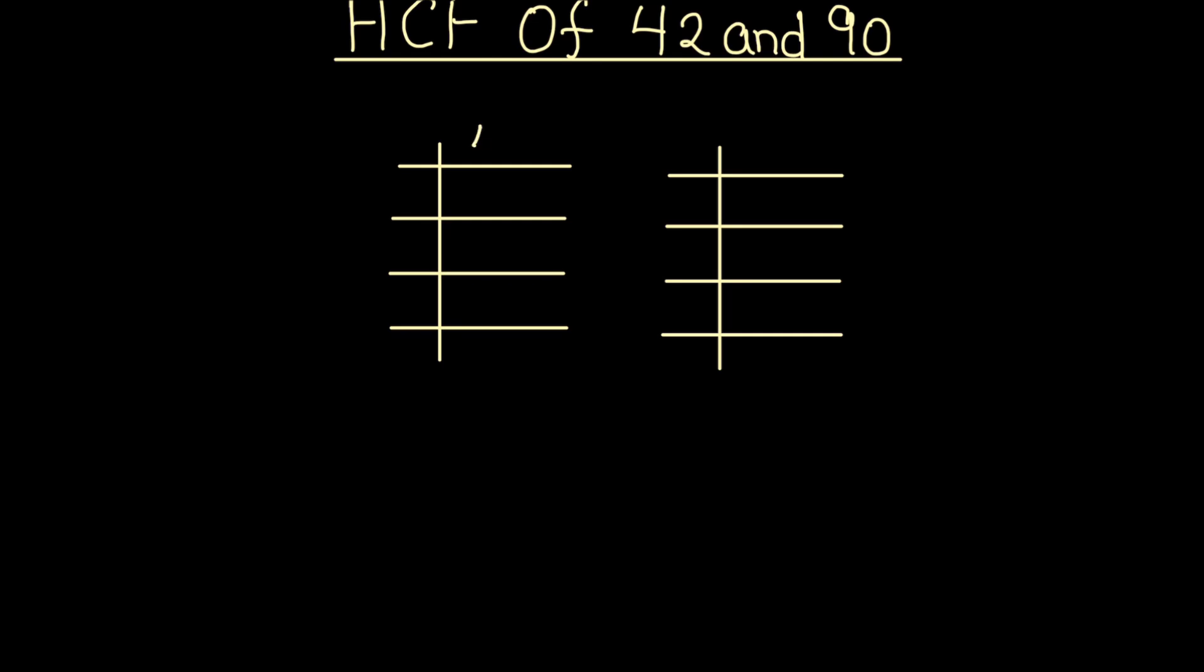First we'll divide 42. As it is even, we can divide it by 2. 2 times 2 is 4, 2 times 1 is 2. Now 21 is an odd number, divisible by the next prime number 3. 3 times 7 is 21, and 7 is a prime number, only divisible by 7. 7 times 1 is 7.